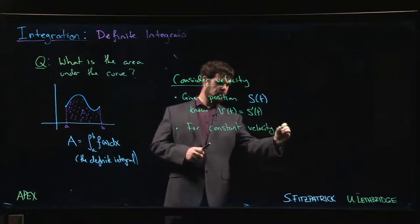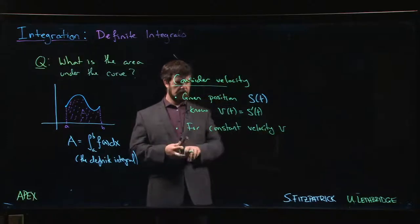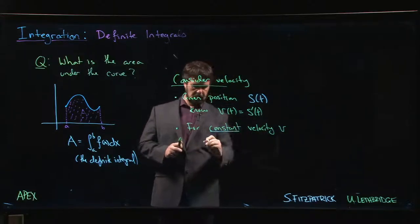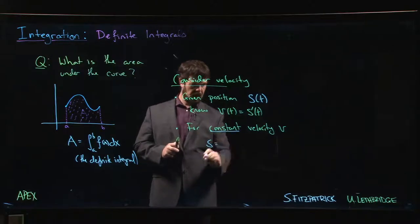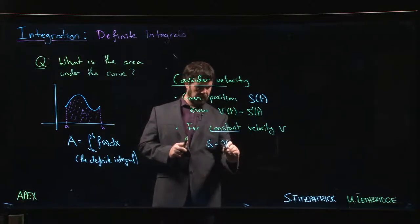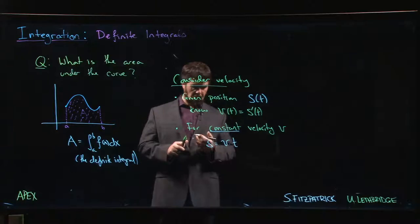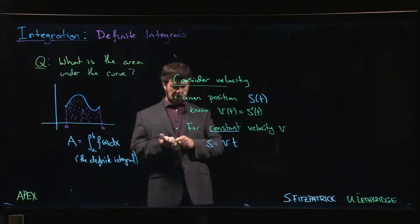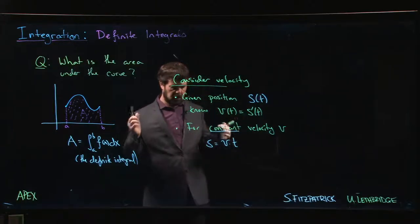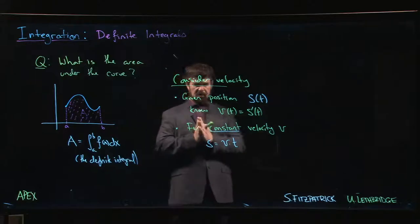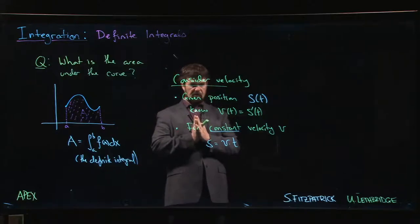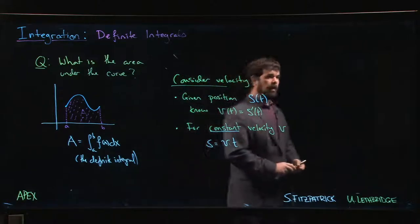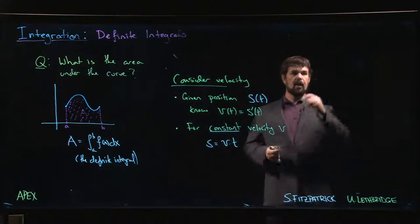let's just call it v — we know that displacement s is just that constant velocity times time. The distance traveled over some period of time is just your velocity times that interval of time. Now if you think about that graphically,